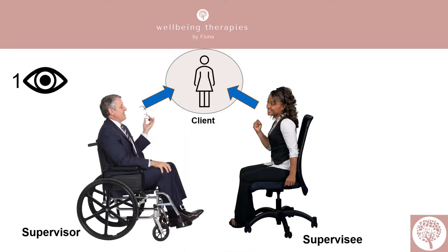When you look at this slide, you can see there's a supervisor, a supervisee or therapist, and the client sits at the centre. The first eye of supervision is when both you and the supervisor focus on the client. The therapist describes the client they're talking about — what they observed in the sessions, including body language and any presenting issues. The main purpose is to keep the client present in the supervision session, so the client is always seen as a person rather than a problem or a task.